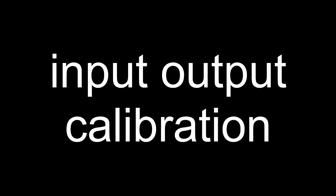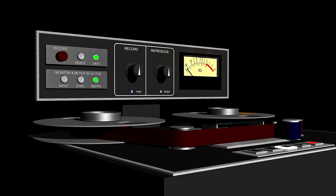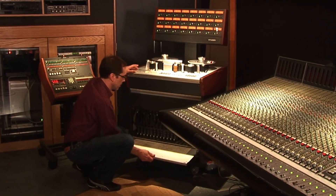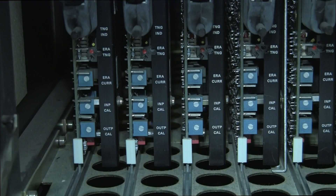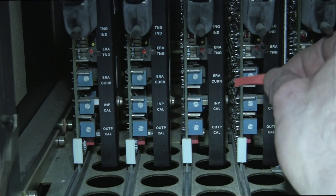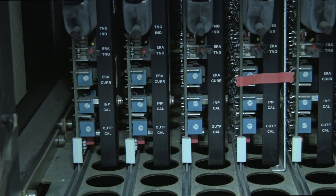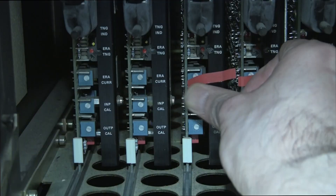First we're going to adjust input and output levels. This doesn't need to be done every time you align your machine, but you should check it to be sure it matches your console. Be sure you don't change any adjustments you don't intend to. The simplest way to avoid doing so is to cover all adjustment screws you'll not be using with a piece of tape.